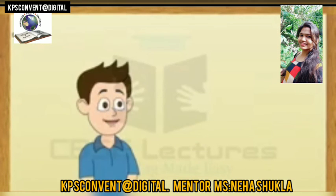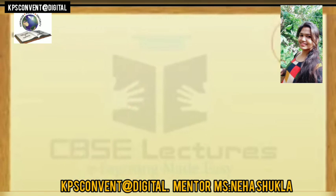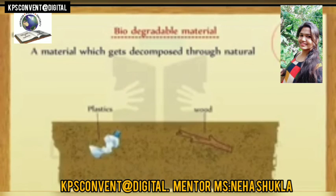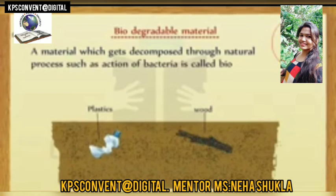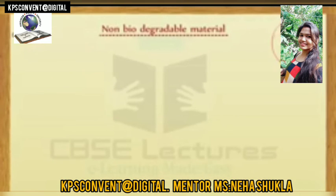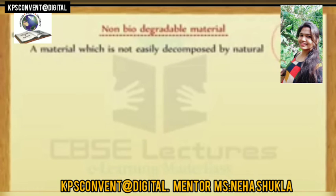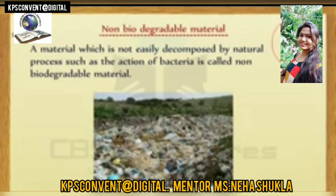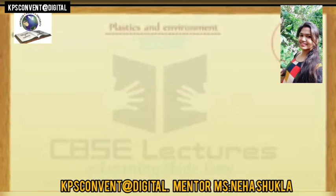Biodegradable and non-biodegradable materials: a material which gets decomposed through natural processes such as the action of bacteria is called biodegradable — for example, cloth, food, paper, and wood. A material which is not easily decomposed by natural processes such as the action of bacteria is called non-biodegradable material, and hence causes pollution. Now you can understand the effect of plastic on the environment.